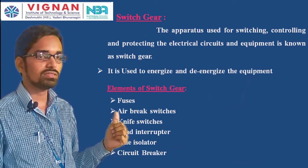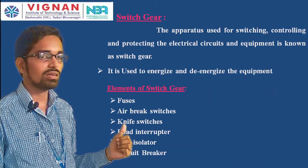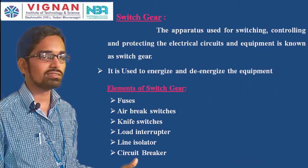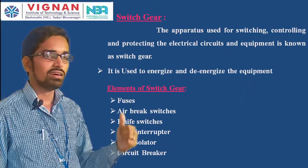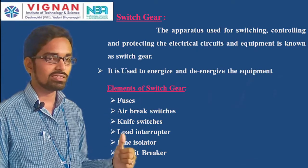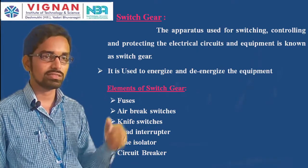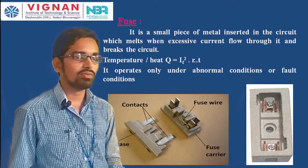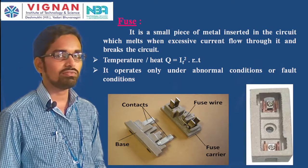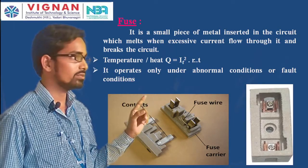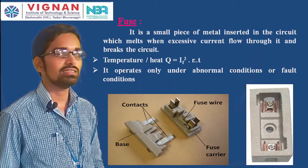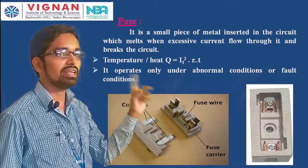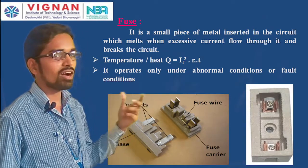The elements of switchgear are: fuses, air brake switches, knife switches, load interrupters, line isolators, and circuit breakers. A fuse is a small piece of metal inserted in the circuit which melts when excessive current flows through it, breaking the circuit.